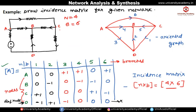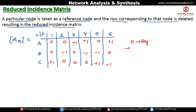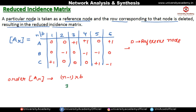Writing all entries from rows A, B, and C: the values are 0, 0, plus one; then 0; then minus one, plus one, plus one, zero, and minus one. This is the reduced incidence matrix with node D taken as reference. The order of the reduced incidence matrix is n minus one cross b — here three nodes and six branches — giving an order of three cross six. Next lecture will cover tie-set matrix, cut-set matrix, and duality.